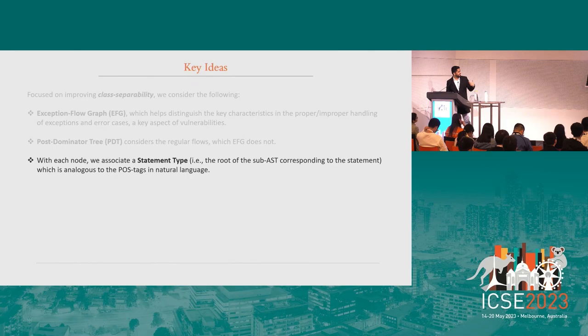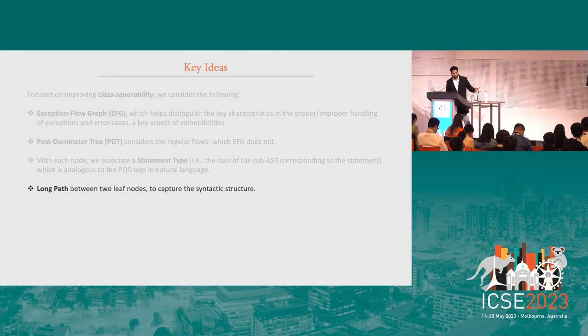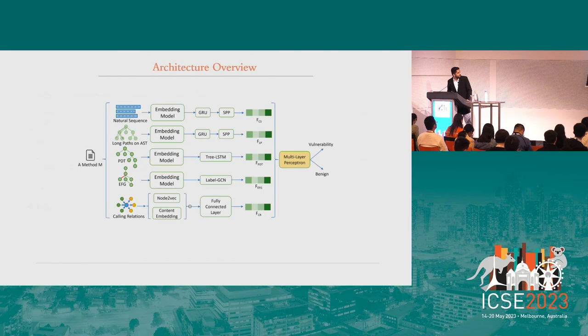Previous works have shown that vulnerable code occurs at statements with specific syntactic types — analogous to parts of speech in natural language. We also consider statement types, long paths to capture syntactic structure, and caller-calling quality relations to capture global context. Using these specific features, we construct embeddings for each and combine them with a fully connected layer to get a central embedding, based on which we predict whether there's a vulnerability in the given method.